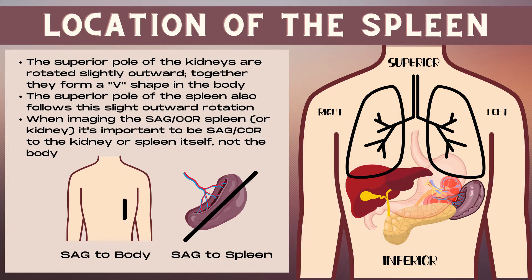Due to where the spleen is located in the body, we traditionally come from a coronal plane to image the spleen because the stomach and gas gets in our way of obtaining a true sagittal spleen image. Another pitfall is that the lungs can get in our way, and as a patient breathes, differing amounts of lung will come down and obscure portions of the spleen.